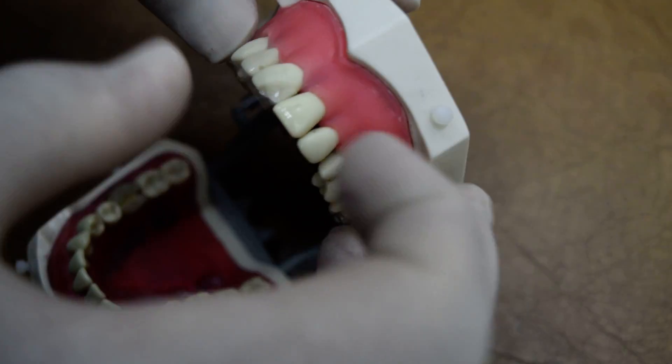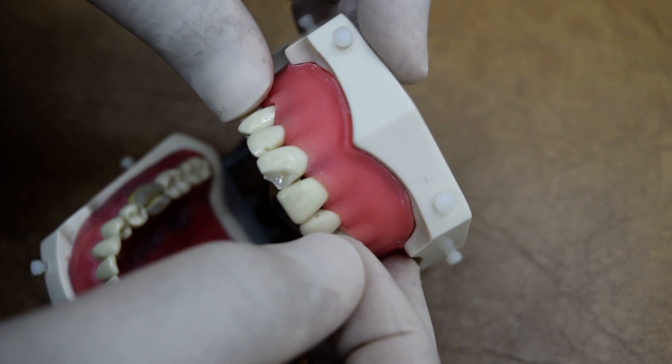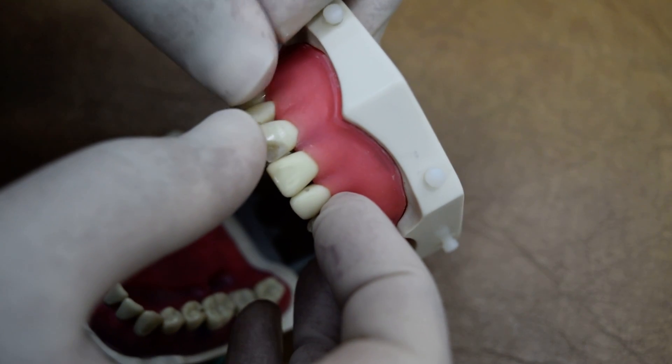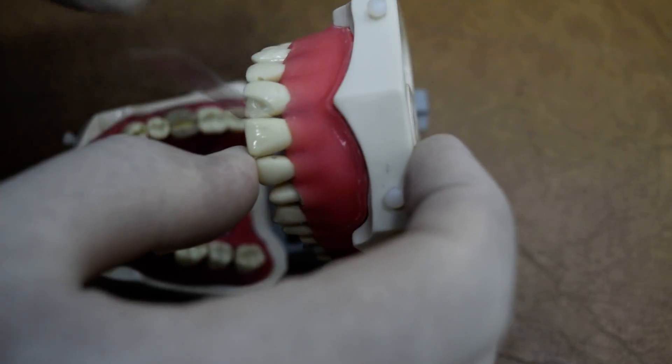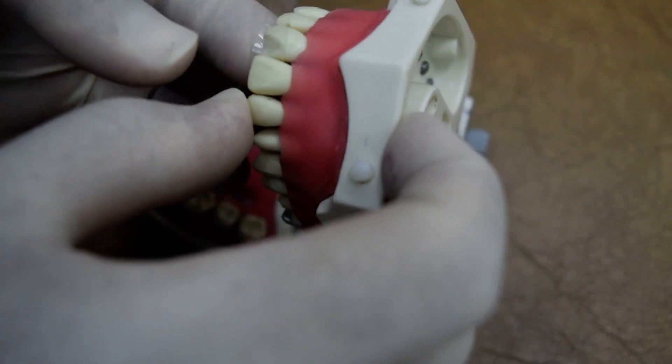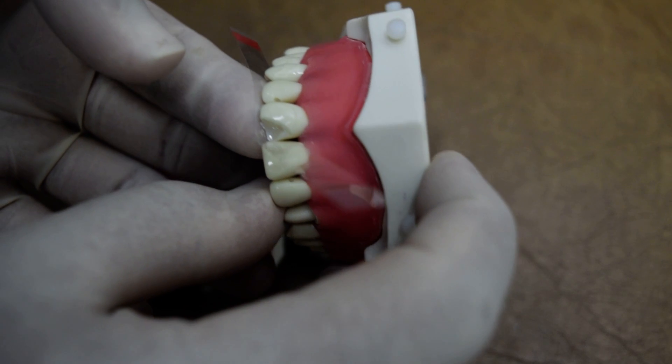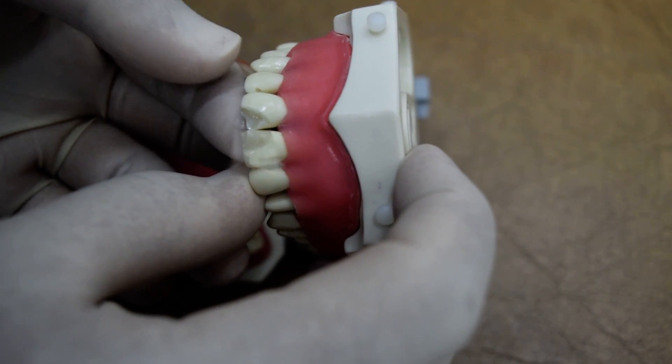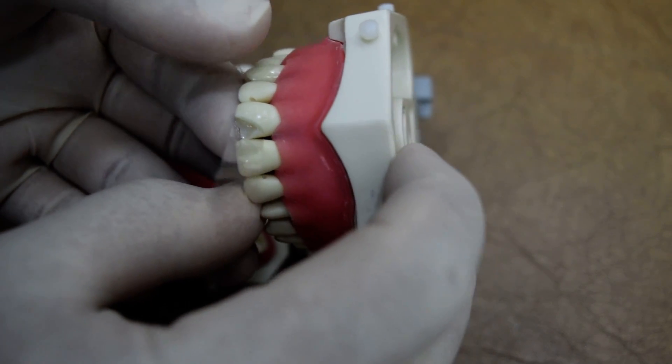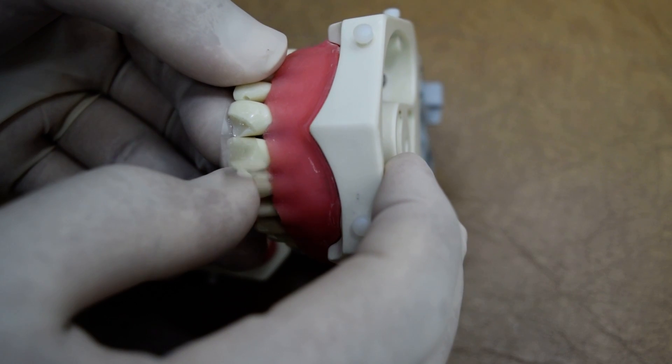As you can see here, the contact is already built, so we can put a wedge or we cannot, it's okay. I mean it's not necessary to put a wedge now because you are going to put only the labial layer with the incisal to build the incisal and labial surface.